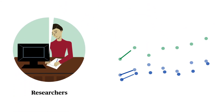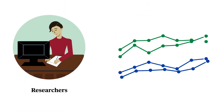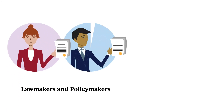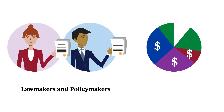With SLDS data, researchers can help educators, policy makers, and the public understand more about the relationships among education and social programs and later outcomes. These analyses can help inform policies and programs on topics like educator preparation or college and career readiness. Lawmakers and policy makers can evaluate how best to allocate funds for early childhood, education, training, and workforce programs, as well as how to improve the policies that govern them.